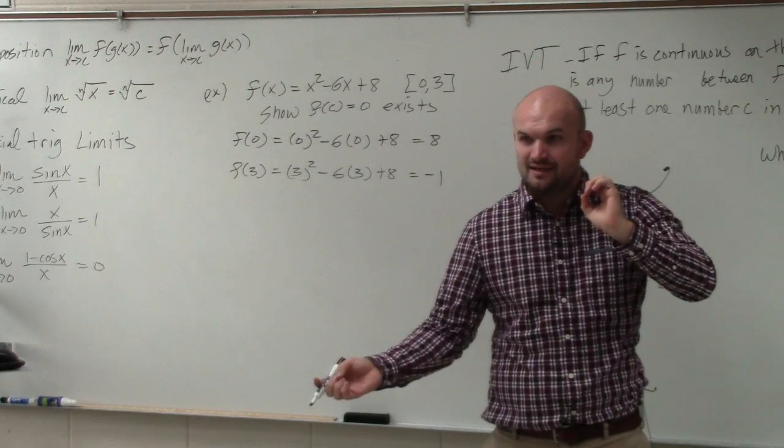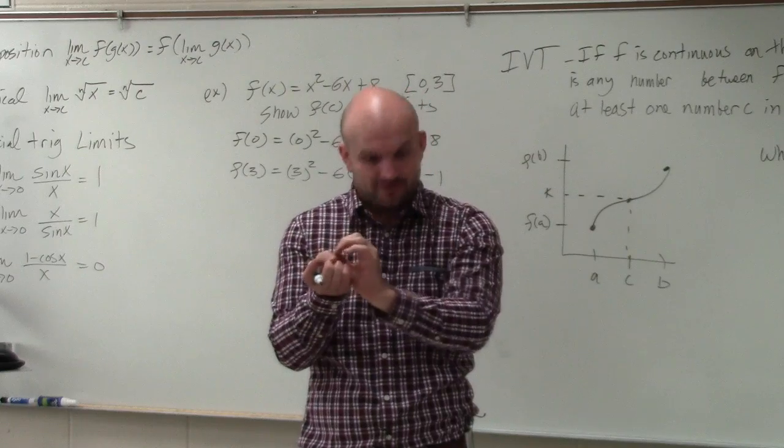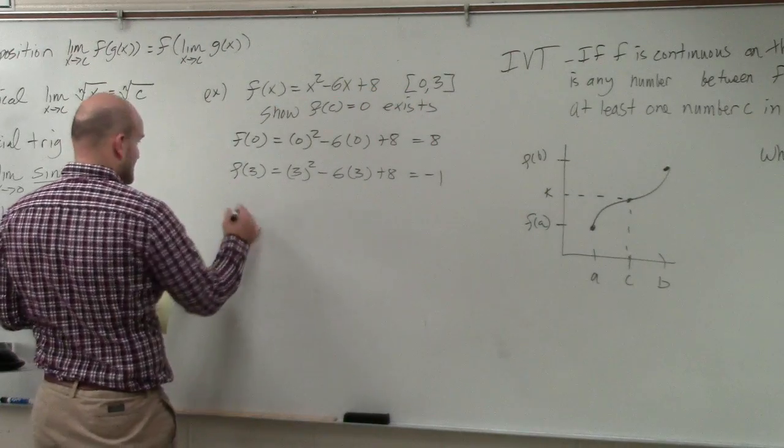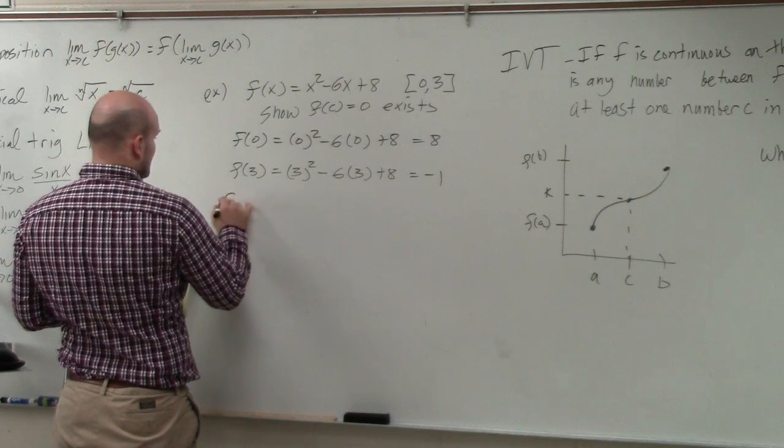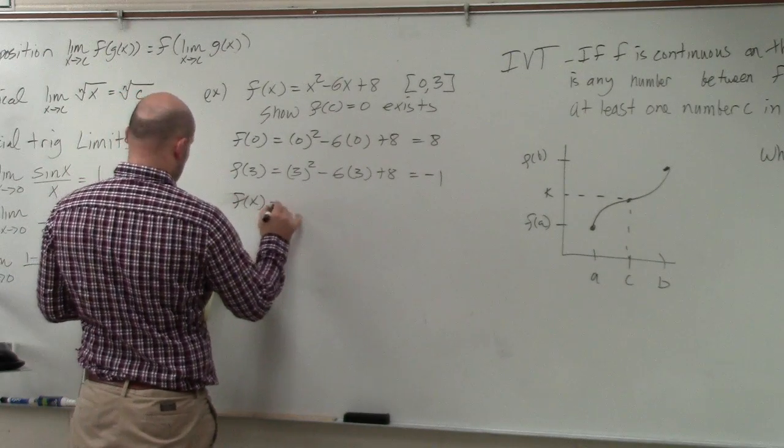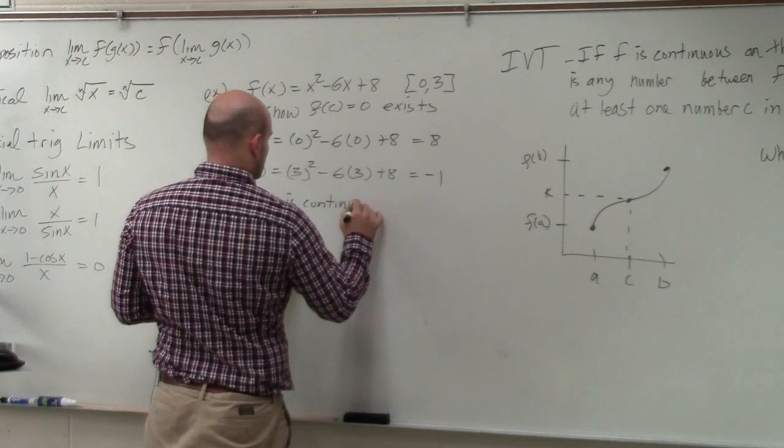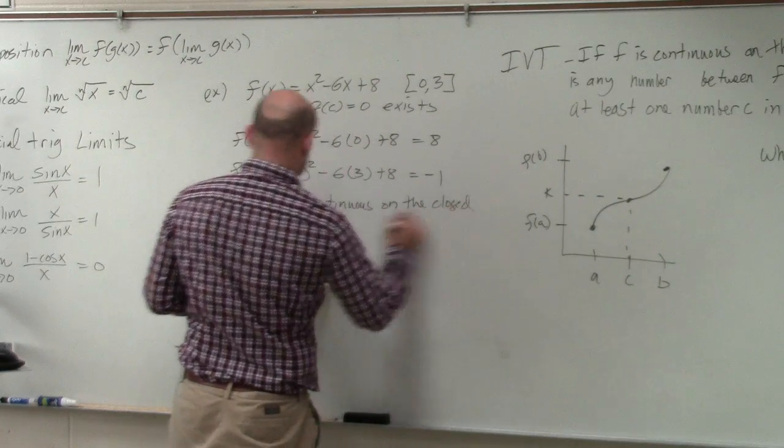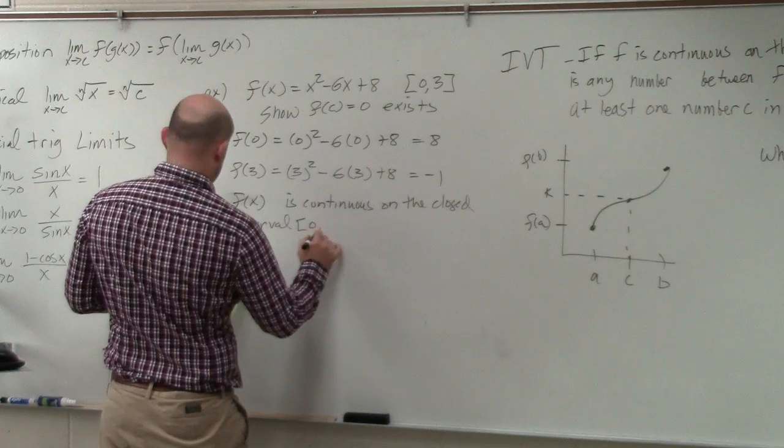What that tells us is there has to be a zero that exists by the Intermediate Value Theorem. On your test, you would basically write verbatim: f(x) is continuous on the closed interval [0, 3].